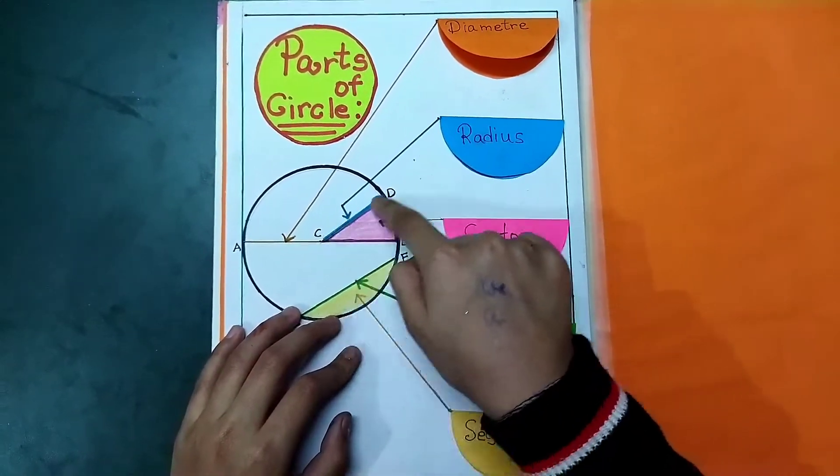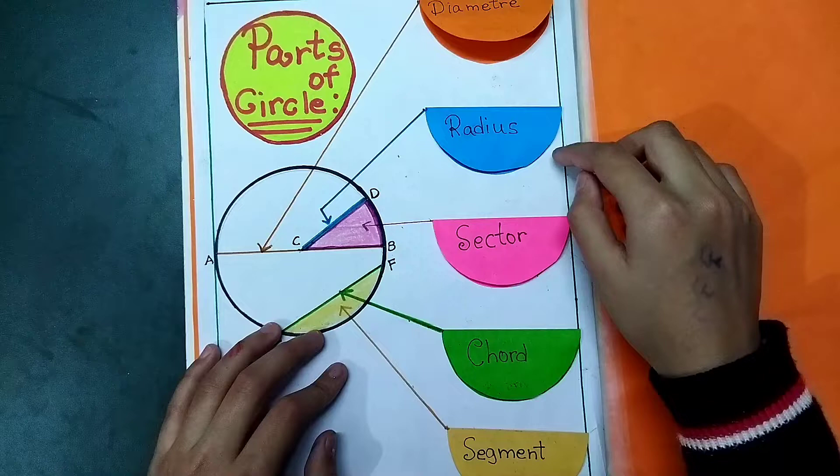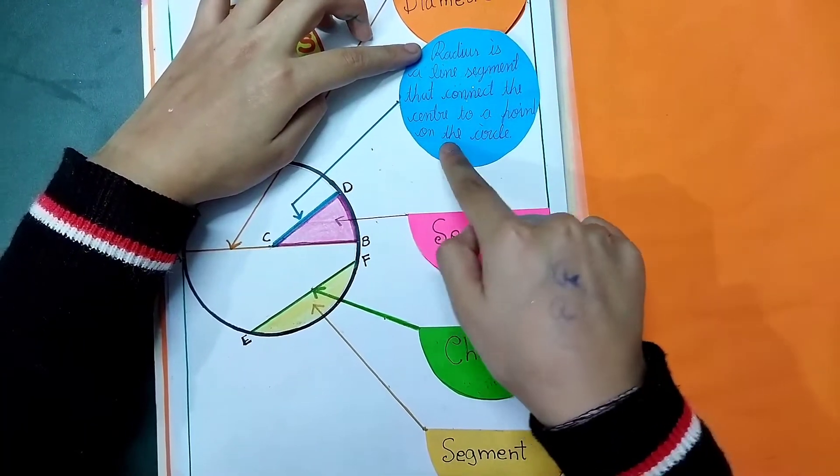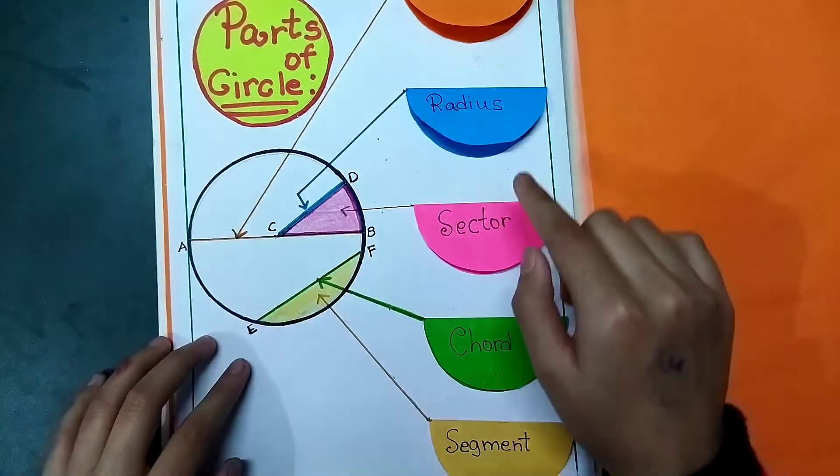Now radius. You can see this blue line. This is radius. Radius is a line segment that connects the center to a point on the circle. This was the definition of radius.